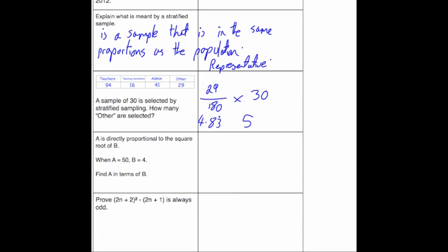The next question says A is directly proportional to the square root of B. That means that A is proportional to the square root of B. And then it gives us the information and it wants us the formula. So we're going to get rid of the proportional sign and write A equals K root B. That means K times root B. Remember K is the constant of proportionality.